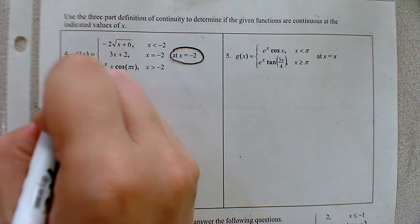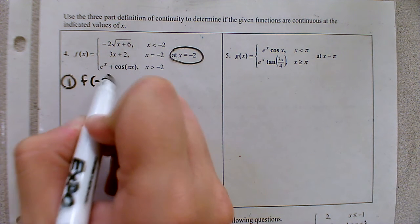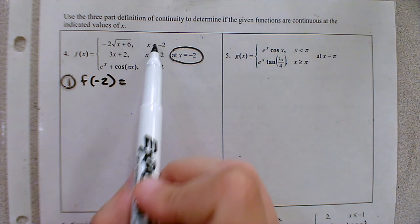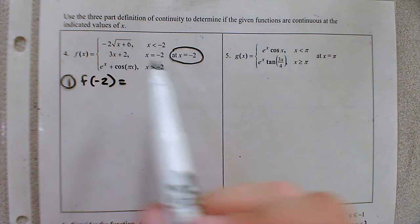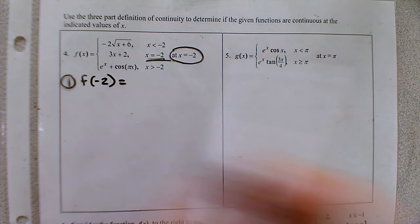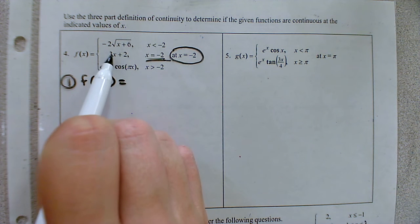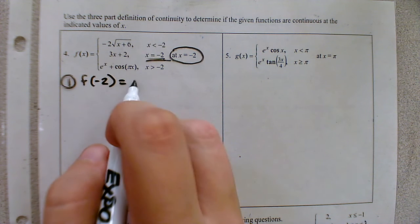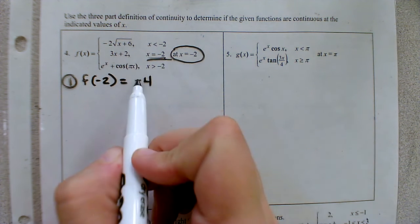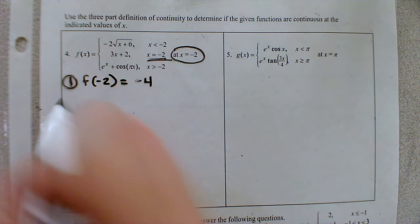Let's check our first criteria: does the point exist? If we substitute negative two into this function, we check the constraint section to see which equation qualifies. Since we want to equal the value of negative two exactly, that satisfies the second equation. Plugging in negative two gives us negative six plus two, which is negative four. We plug in a number, we get out a number, so the point exists — first criteria satisfied.